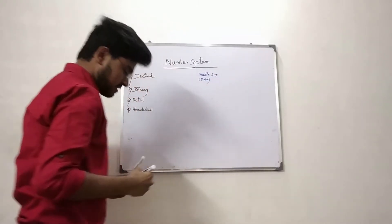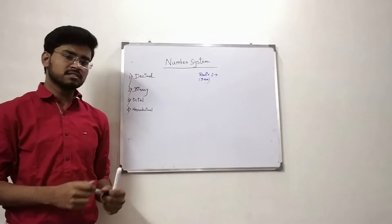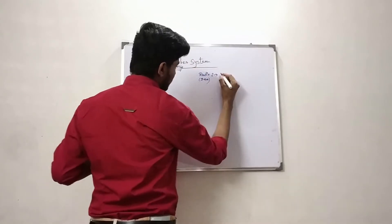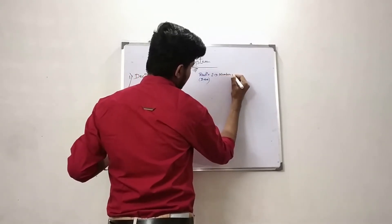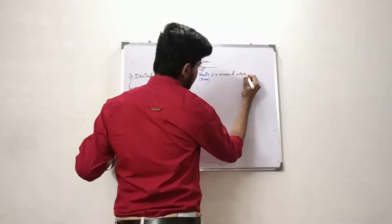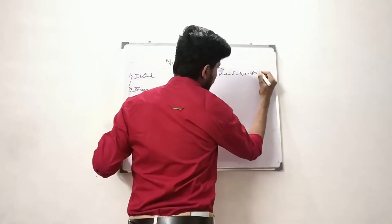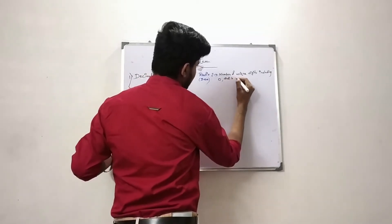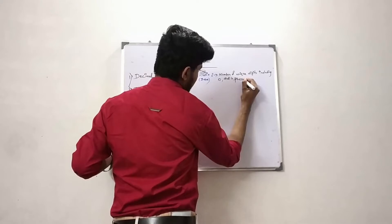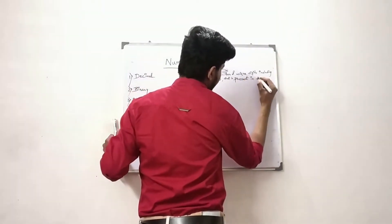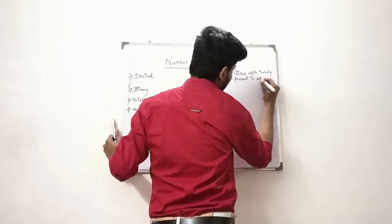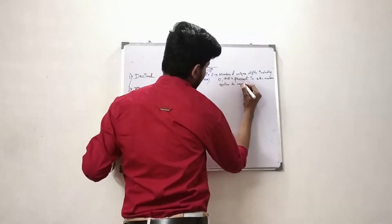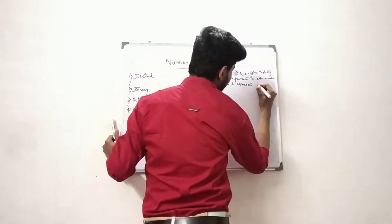Radix or base is nothing but the number of unique digits, including 0, that is present in any number system to represent that particular number system.